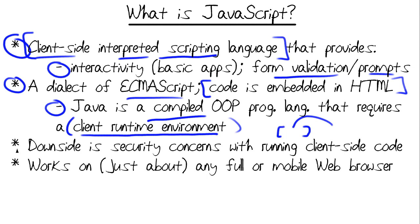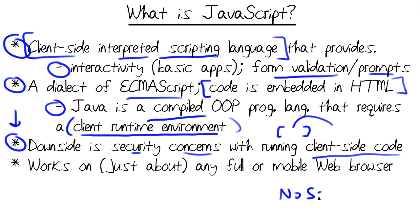Now back to JavaScript. A chief downside and criticism is that it has security concerns. Any code that's going to be downloaded to a user's computer and run on their system poses security concerns. For instance, there are many web browser extensions you can install free of charge. NoScript is a good example — it will block JavaScript out of the box, and then you as a user can selectively enable that code if you want to.